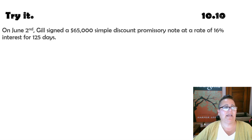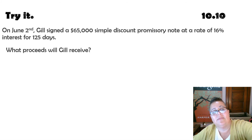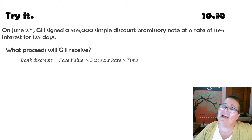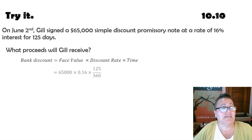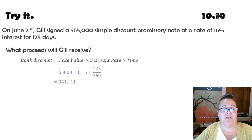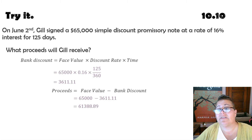On June 2nd, Jill signed a $65,000 simple discount promissory note at a rate of 16% for 125 days. To find the proceeds, we calculate the bank discount first: $65,000 × 16% × (125/360) = $3,611.11. The proceeds are $65,000 minus $3,611.11, which equals $61,388.89.